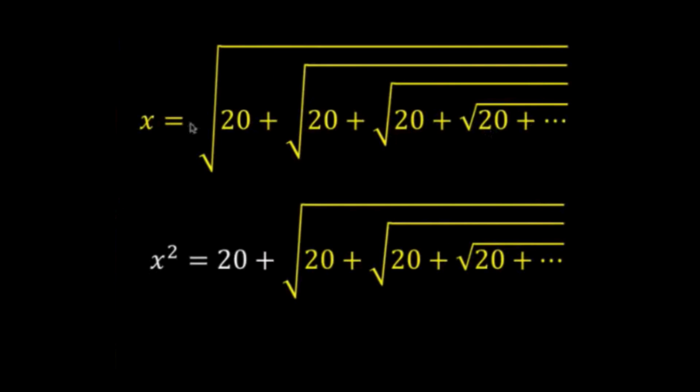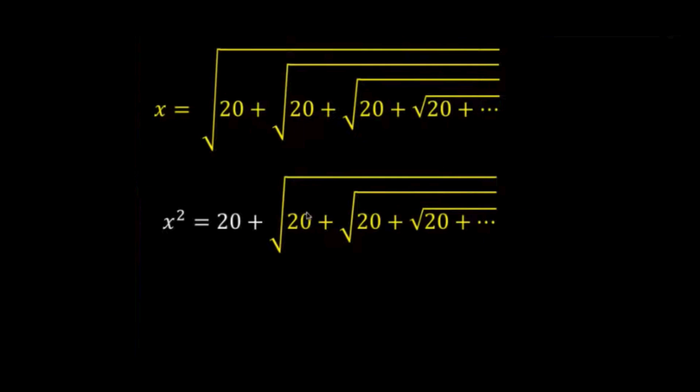And since the top is equal to x, that means this string of radicals at the bottom is also x. So we copy the x squared, we copy 20, and we replace this yellow radicals by x.